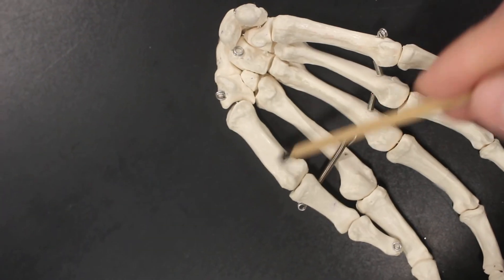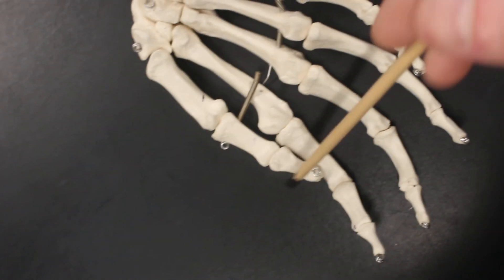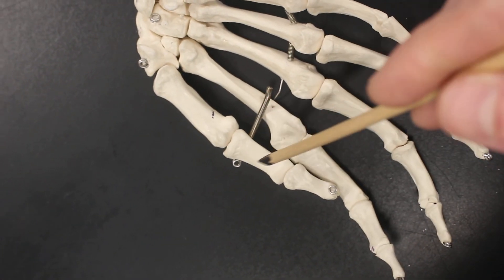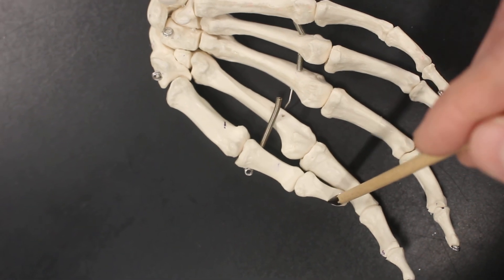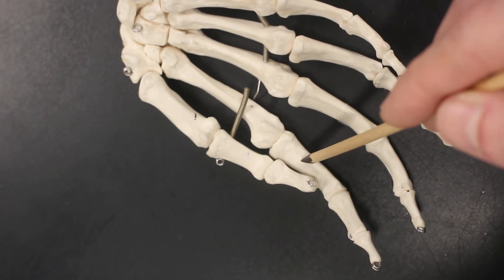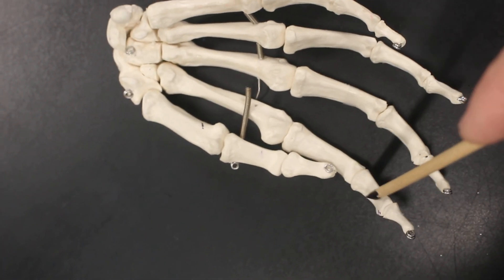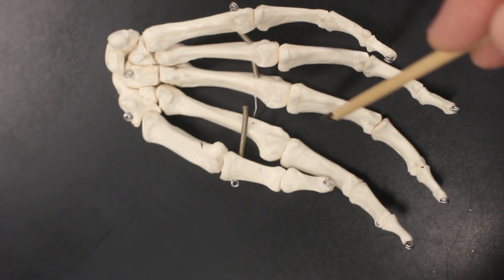These are the metacarpals, one, two, three, four, five. These are all the phalanges. Proximal phalanx one, distal phalanx one, proximal phalanx two, middle phalanx two, distal phalanx two, and so on, threes, fours, and fives.